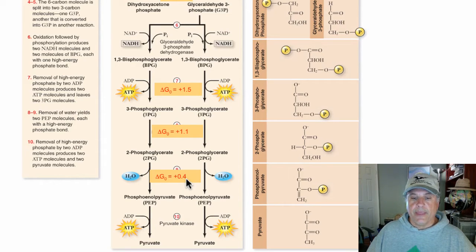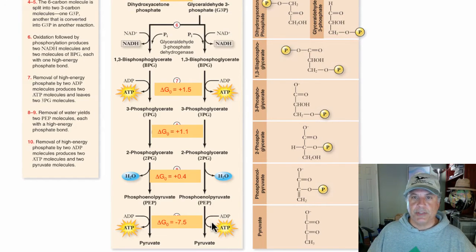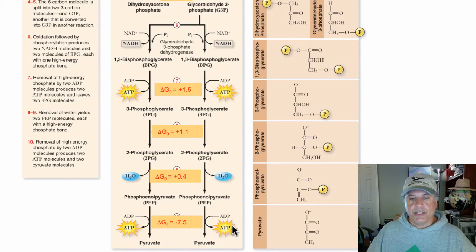Finally, phosphoenolpyruvate is converted to pyruvate. We have a 3-carbon molecule, pyruvate — and ATP is produced again! So now we have produced 2 more molecules of ATP. At the end of glycolysis we have 2 molecules of pyruvate and we have produced a net yield of 2 molecules of ATP.